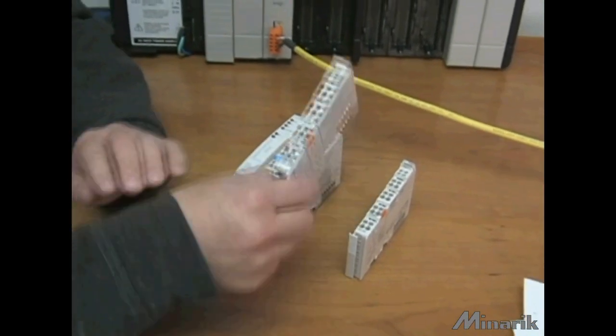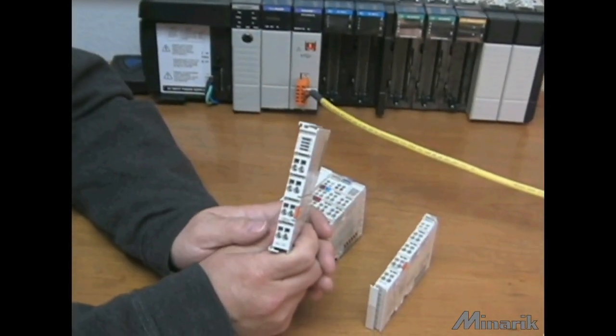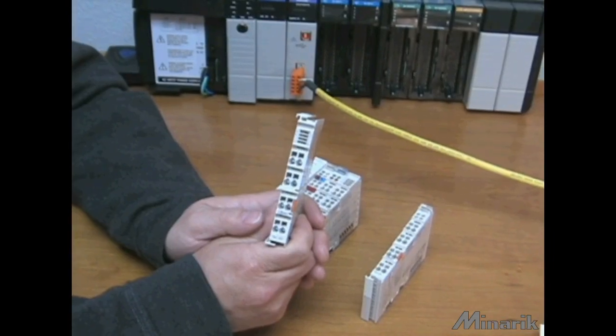In WAGO's case, I.O. slices describes the point of connection for the devices on the machine, such as switches and sensors.